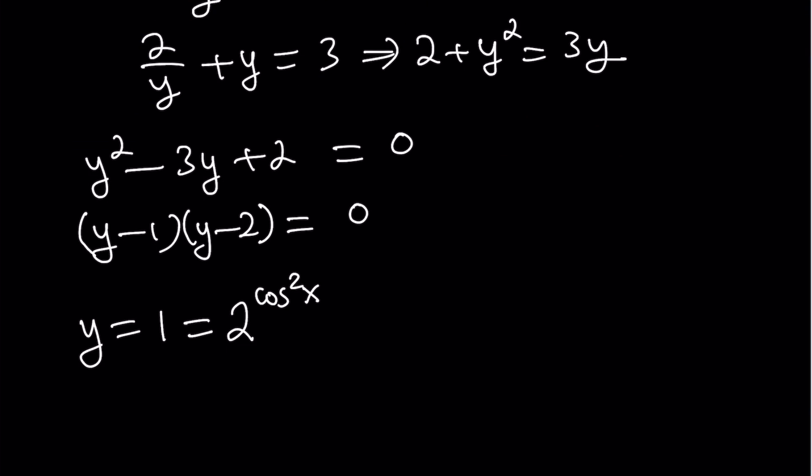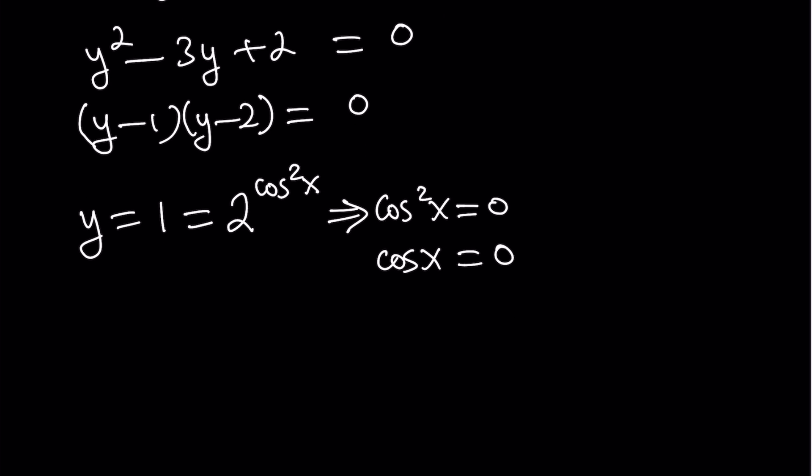Now, 2 to the power something equals 1. That implies that the exponent is 0. So from here, we get cosine squared x equals 0, which implies cosine x equals 0. Because if something squared is 0, it has to be 0.